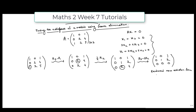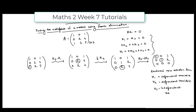From this we can say that in the first column there is a leading coefficient, so x1 is a dependent variable. In the second column there is also a leading coefficient, so x2 is a dependent variable. But that is not the case for the third column — there is no leading coefficient, so x3 is our independent or free variable.